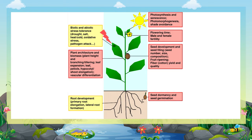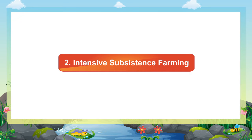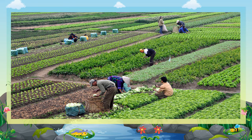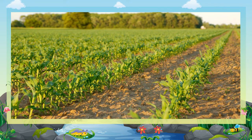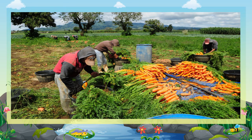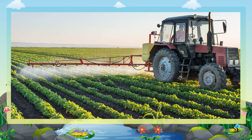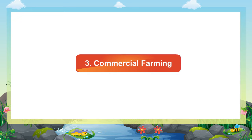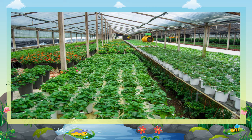Two: Intensive subsistence farming. This type of farming is practiced in highly populated areas. It is labor-intensive farming where high doses of biochemical inputs and irrigation are used for obtaining higher production. The farmers continue to take out maximum output from the limited land in the absence of alternative sources of livelihood. Thus there is enormous pressure on the agricultural land.